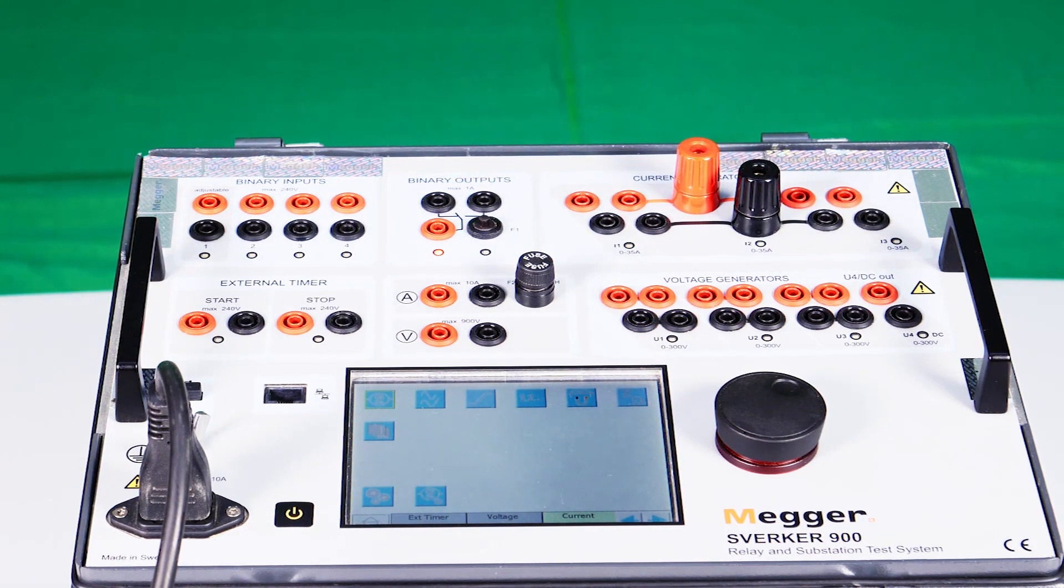Each voltage generator has the capability to deliver 0 to 300 volt AC or DC. In AC mode, the frequency can be varied from 10 to 600 Hertz.